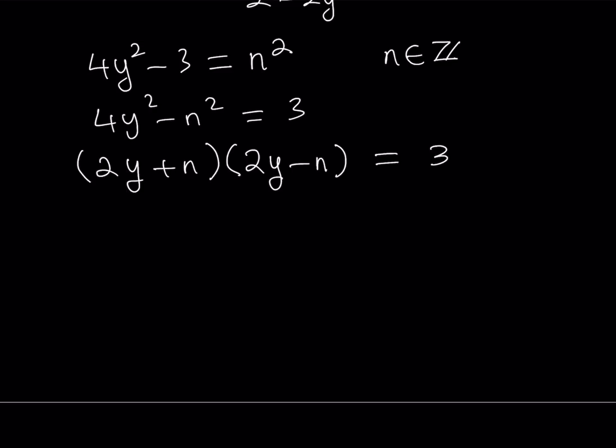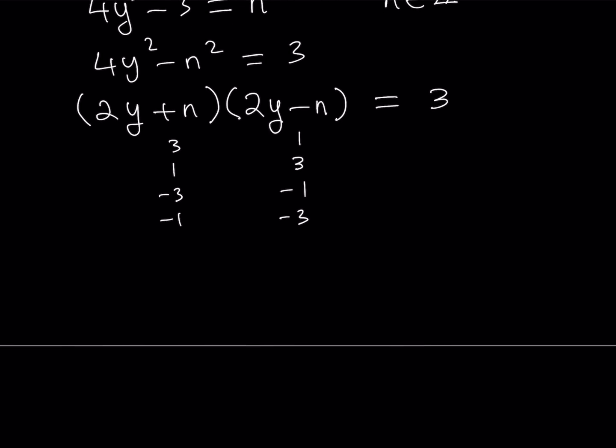For example, this can be 3 and this can be 1. This can be 1 and this can be 3. This can be negative 3 and this can be negative 1. And this can be negative 1 and this can be negative 3. Since 3 is a prime number, those are the only cases we need to worry about. So let's go ahead and check each case.